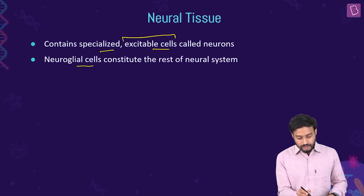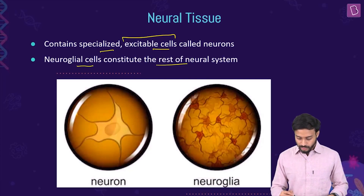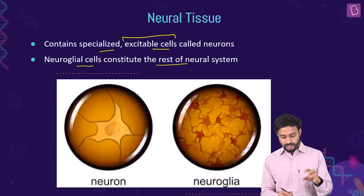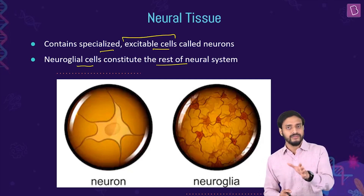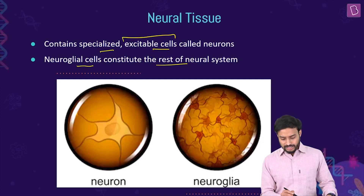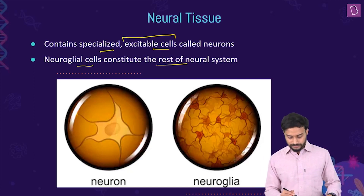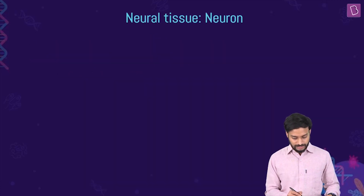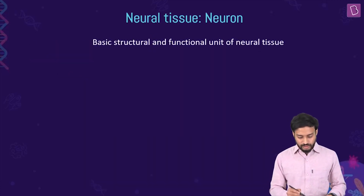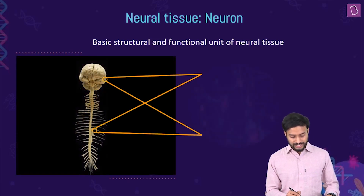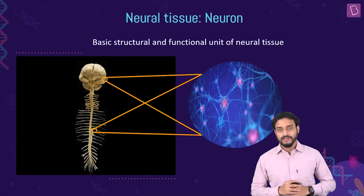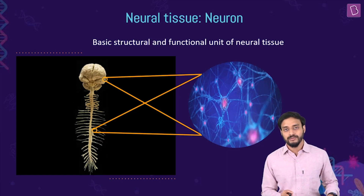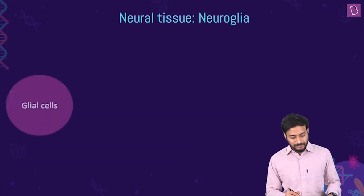Glial cells constitute the rest of the neural system. They are able to conduct neural impulses in the form of electrical impulses, while glial cells are supportive in function. The neuron is the basic structural and functional unit of neural tissues — you can see a network of neurons on screen.